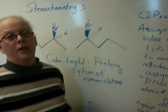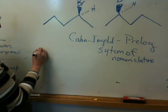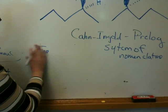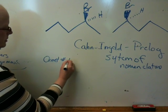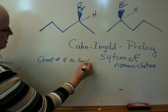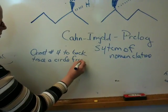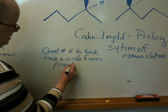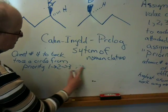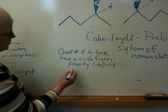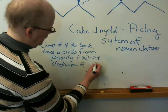Watching me do this is really the whole thing. Once you do this, you trace a circle. You orient number 4 to the back, then you trace a circle from priority 1 to 2 to 3 — not to 4, because that one's in the back — 1 to 2 to 3. If the circle is clockwise, you call it R, which stands for, I believe, rectus.